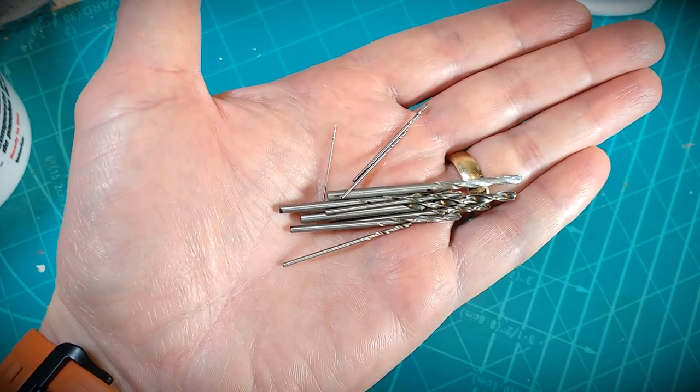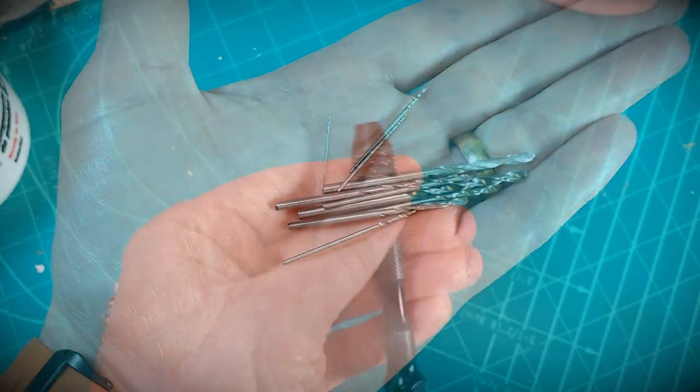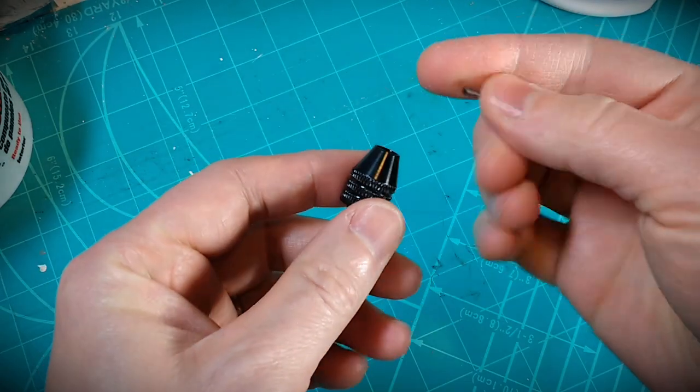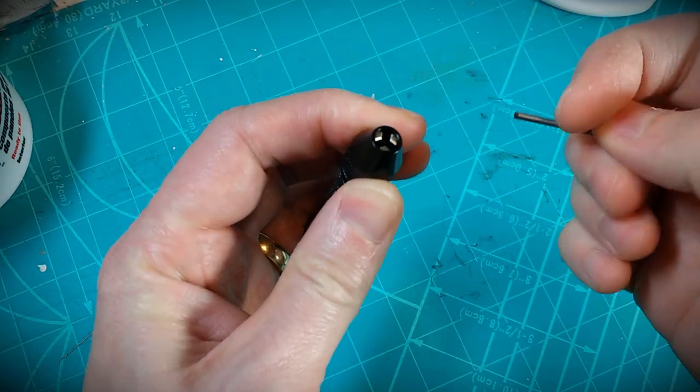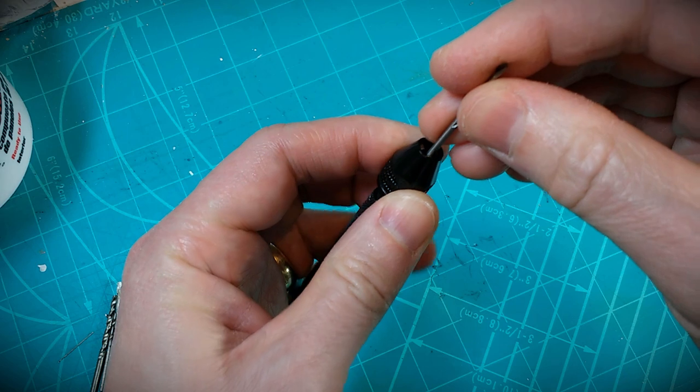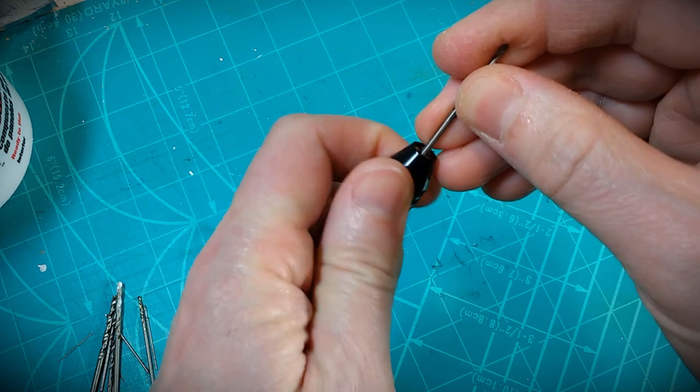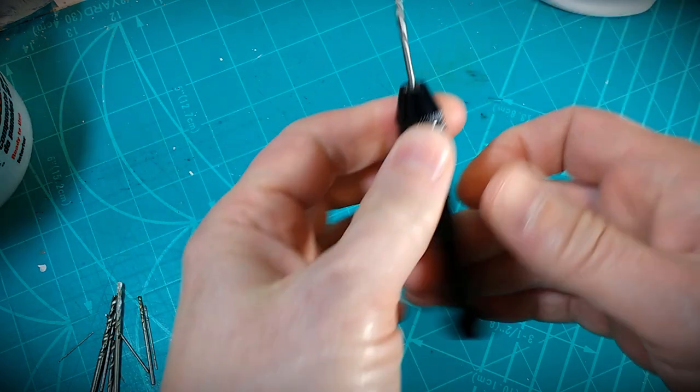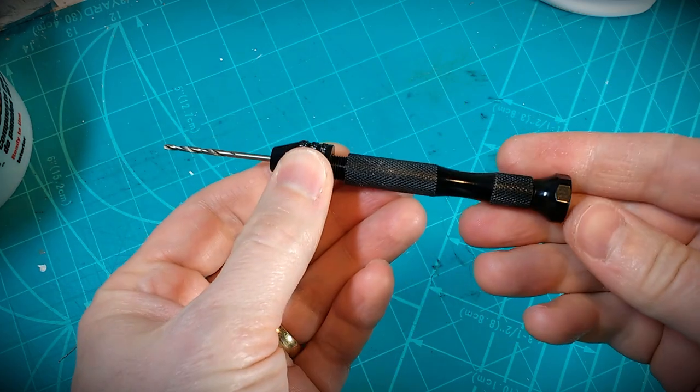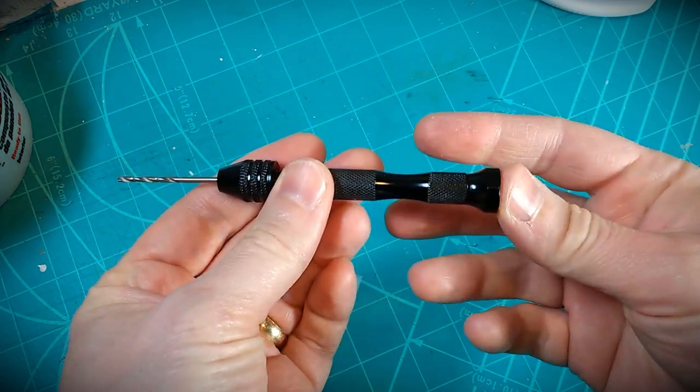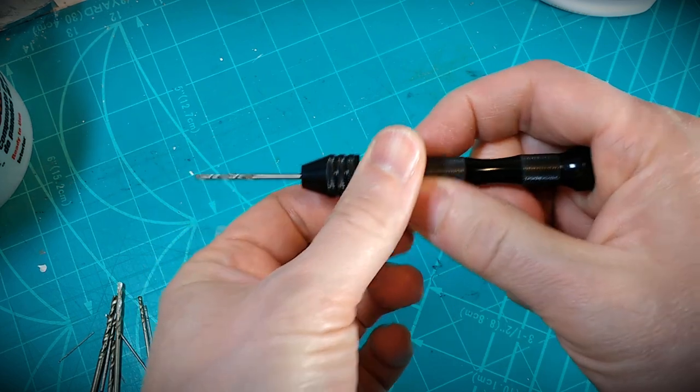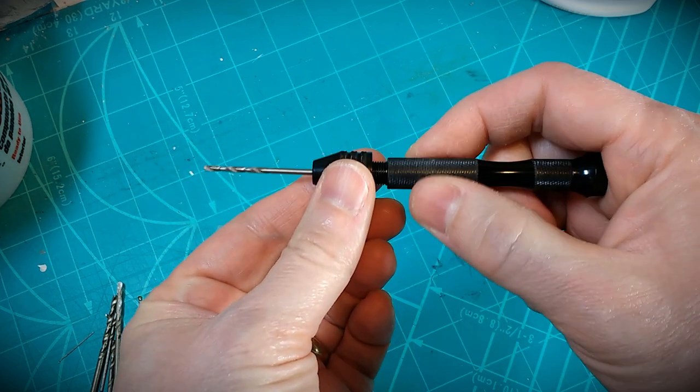This is great for getting into tight small areas or dealing with real fine material that you can get very precise. You can see some of the drill bits that come with this, they are so small, so fine. Again, that's one of the key pieces for sure to pick up, and they're pretty inexpensive as well.